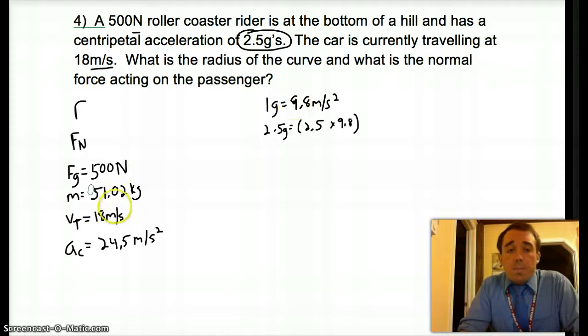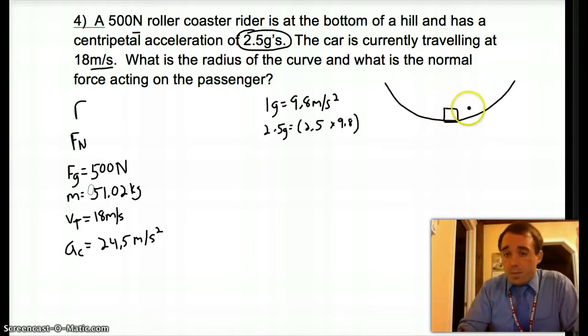Let's see. We have to find the normal force. We have to find R. If we're trying to find normal force, it's at the bottom of the hill. So R radius is up here. So we have some forces. Our centripetal force has to act up. Our force of gravity going down. Our normal force has to be up as well.